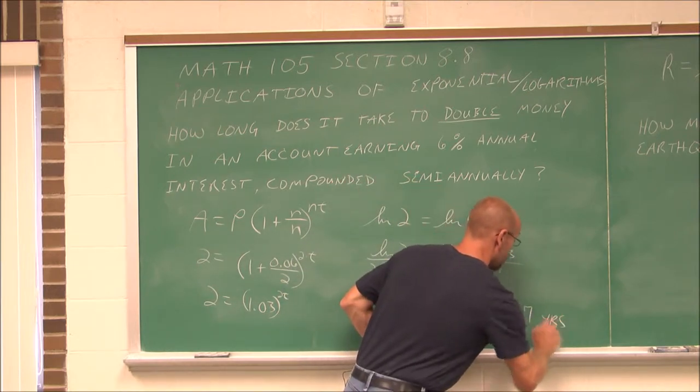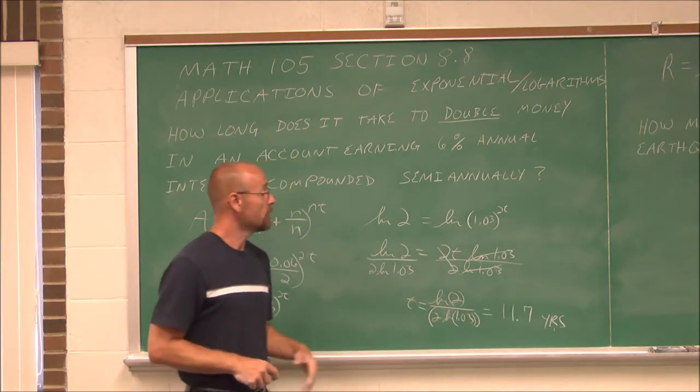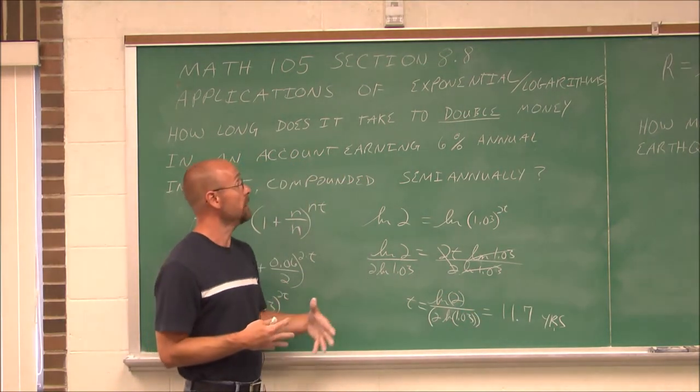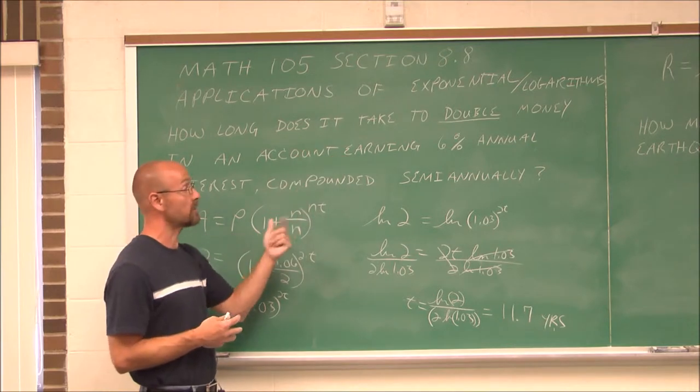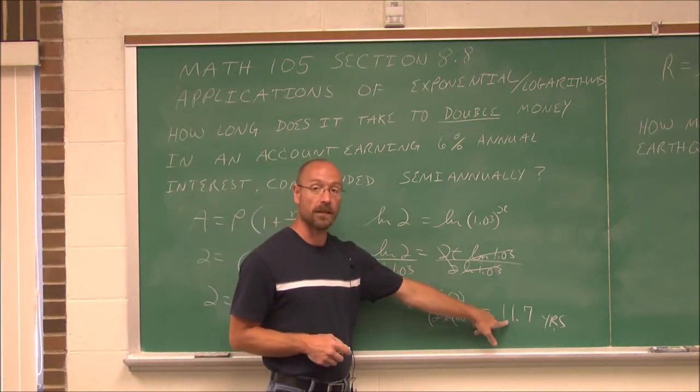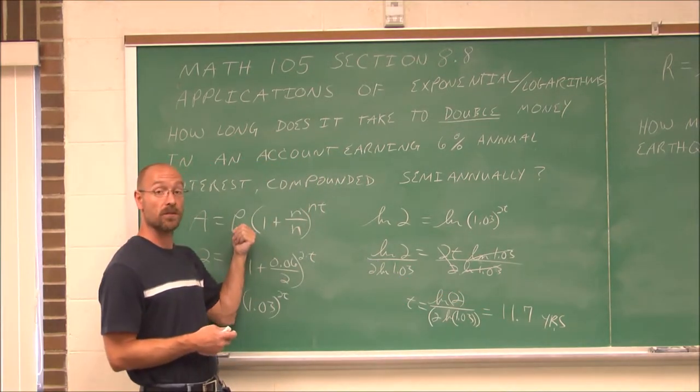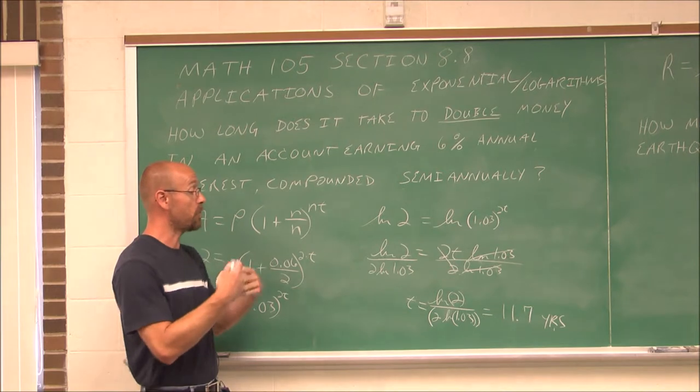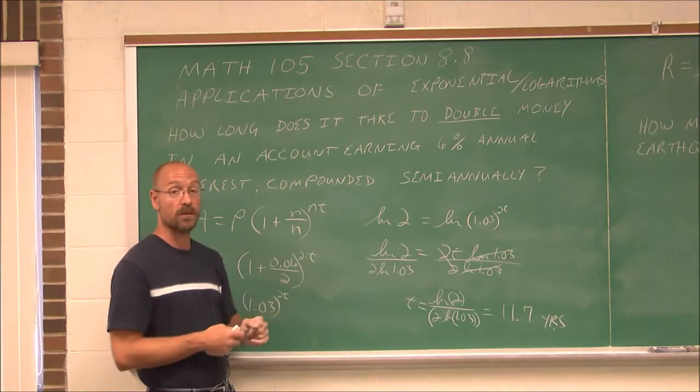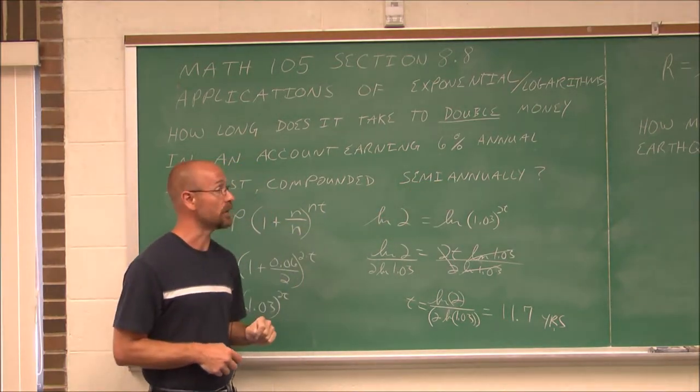When I plug this into my calculator, I get 11.7 years. So if I want to double my money, I can put it into an account at 6% compounded semi-annually, and I will double it in 11.7 years, regardless of how much principle I actually start with.